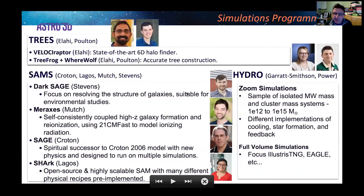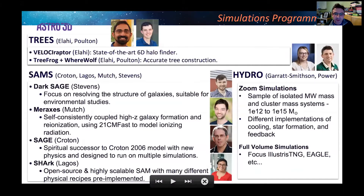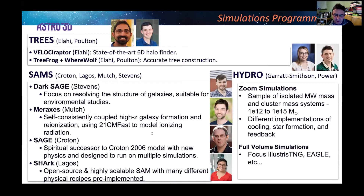So those are the simulations we're running. We were also blessed to have several very capable people involved in semi-analytical models, and we have an array of SAMs used to study different kinds of problems, each with their relative strengths. Simon Mutch is the developer of the Meraxes code, which we use to make predictions for the EOR. We have Sage and Dark Sage by Darren and Adam, ideal for looking at the internal structure of galaxies. And the Shark code, being developed by Claudia, is open source, very scalable, with lots of different physical recipes to explore galaxy formation.